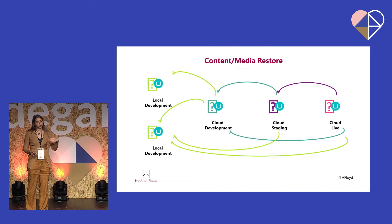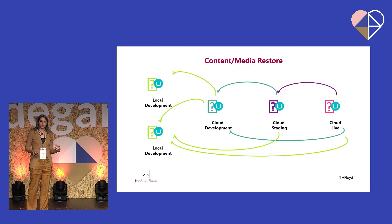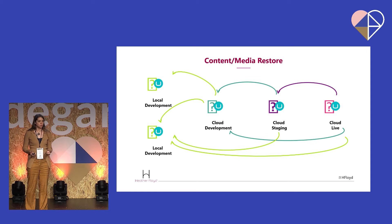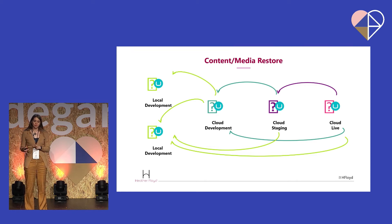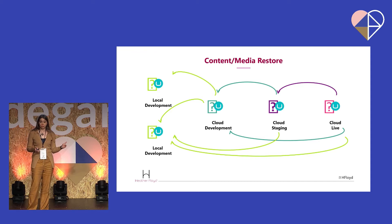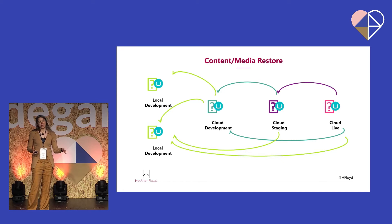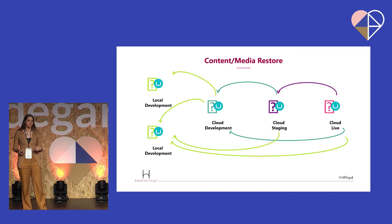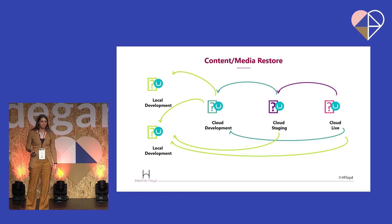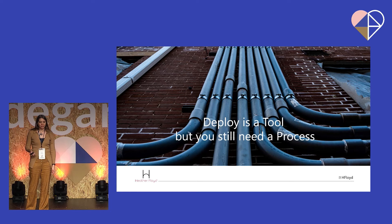For content and media, which also generally moves forward, you can also restore it from any forward environment to your current environment. If you're working locally, you can bring back content from any of your cloud environments. This is really helpful when local developers are working on a new feature and want to make sure the current live content is compatible. Any cloud environment can also pull back from forward cloud environments—staging can be freshly updated from live, or development can get its content from live or staging.